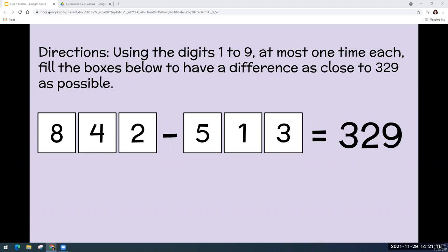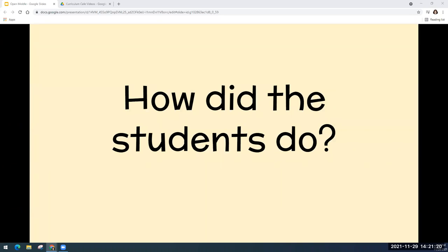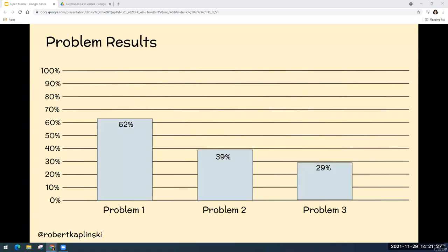So you may be wondering how the students do on these problems, right? How will the students do? Well, Robert Kaplinsky actually asked a group of students to solve these same three problems that I just had to work on. And here are the results. You can see that out of this group of students that he had solved these problems, 62% of them were successful in completing problem number one correctly. Only 39% of those same students were successful with problem two. And only 29% of those students were successful in solving problem number three.